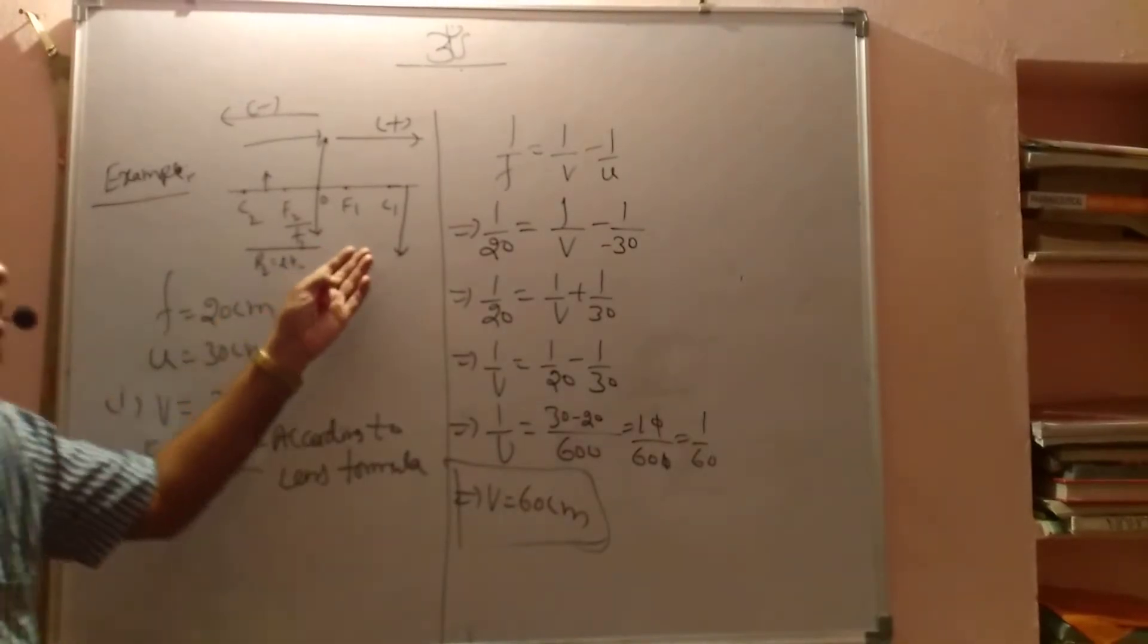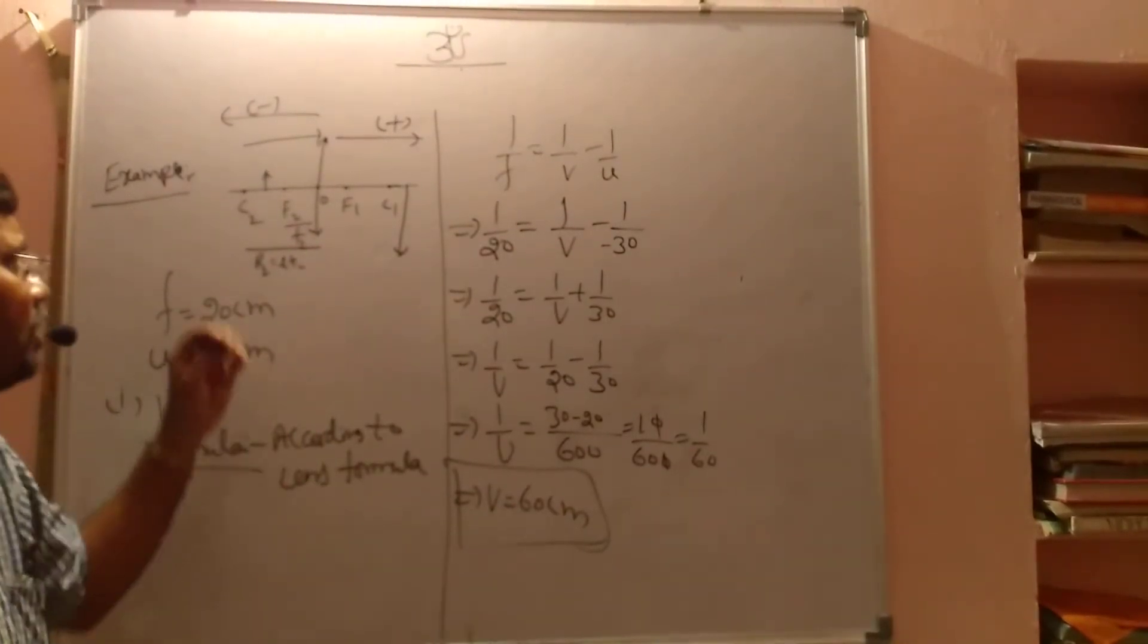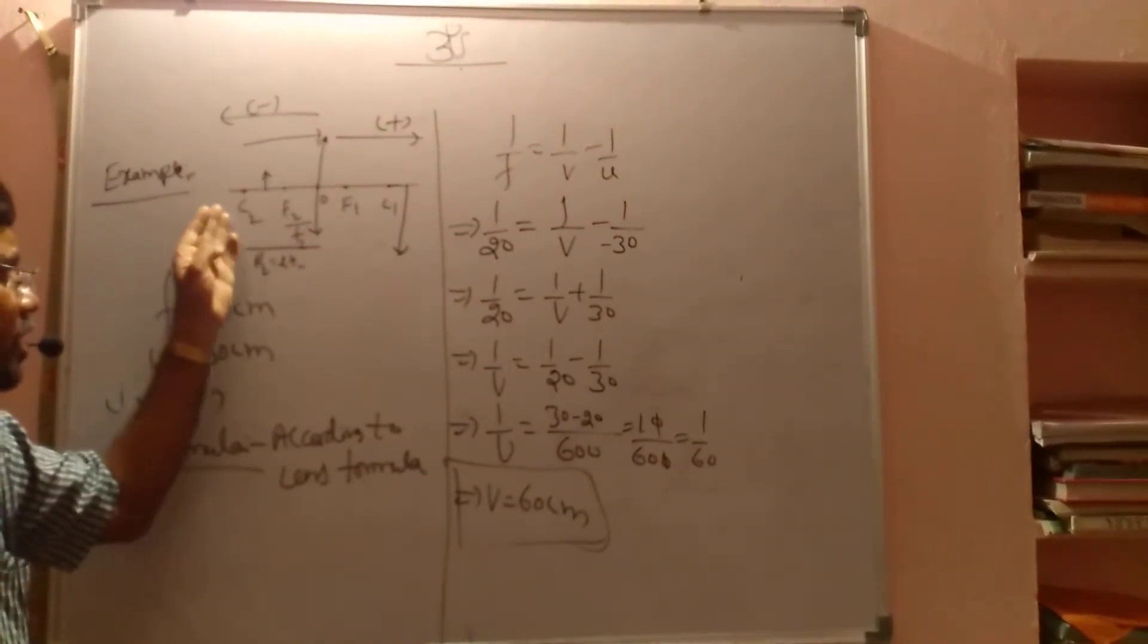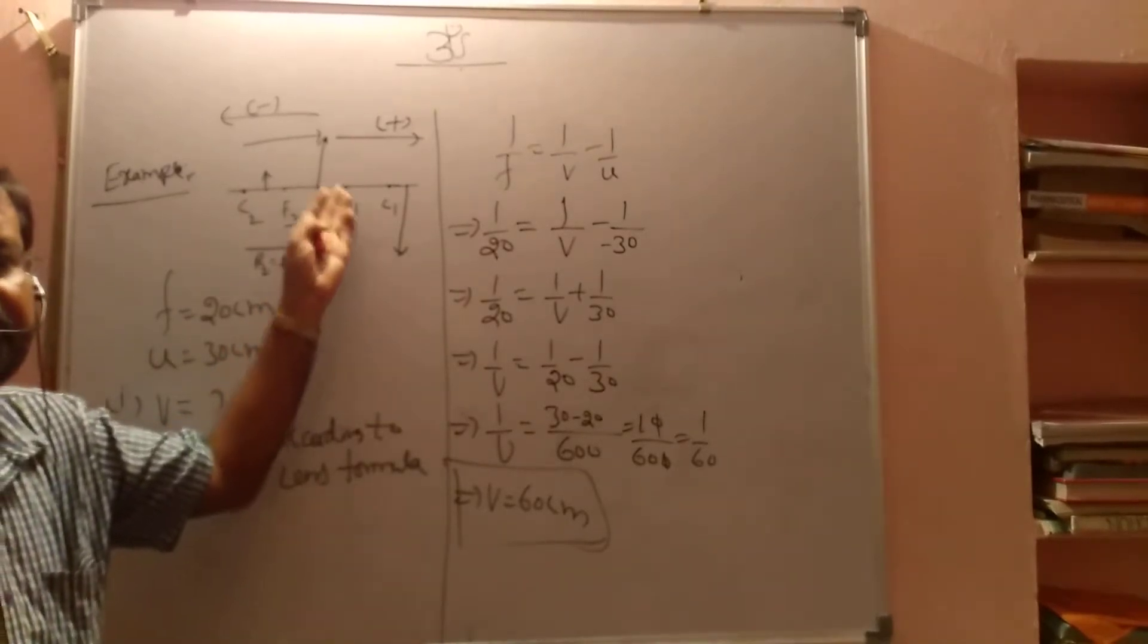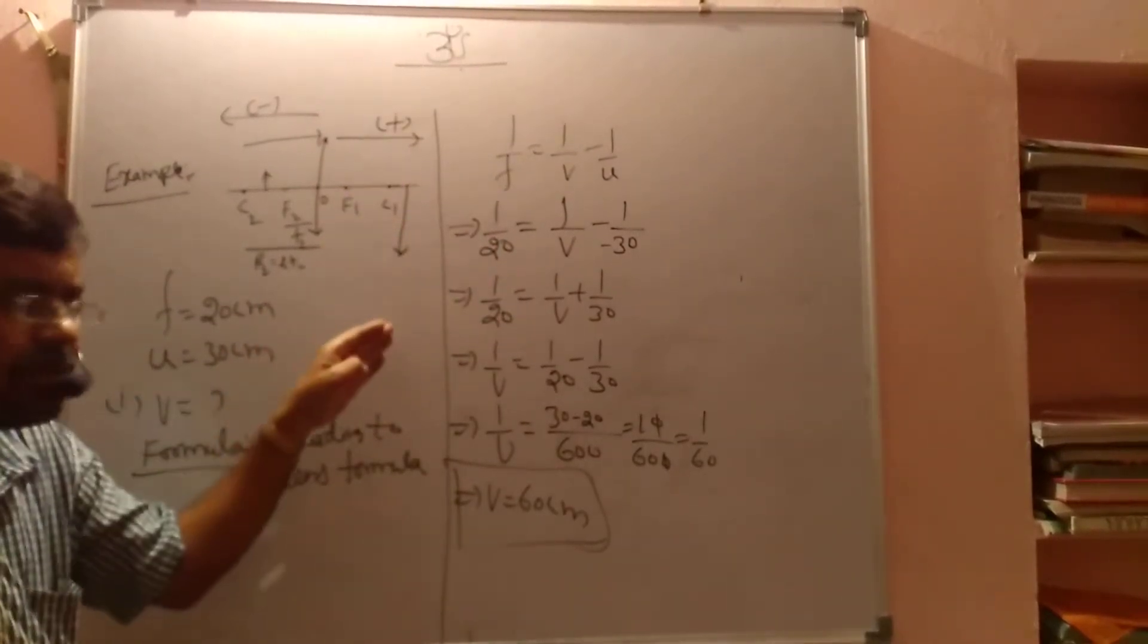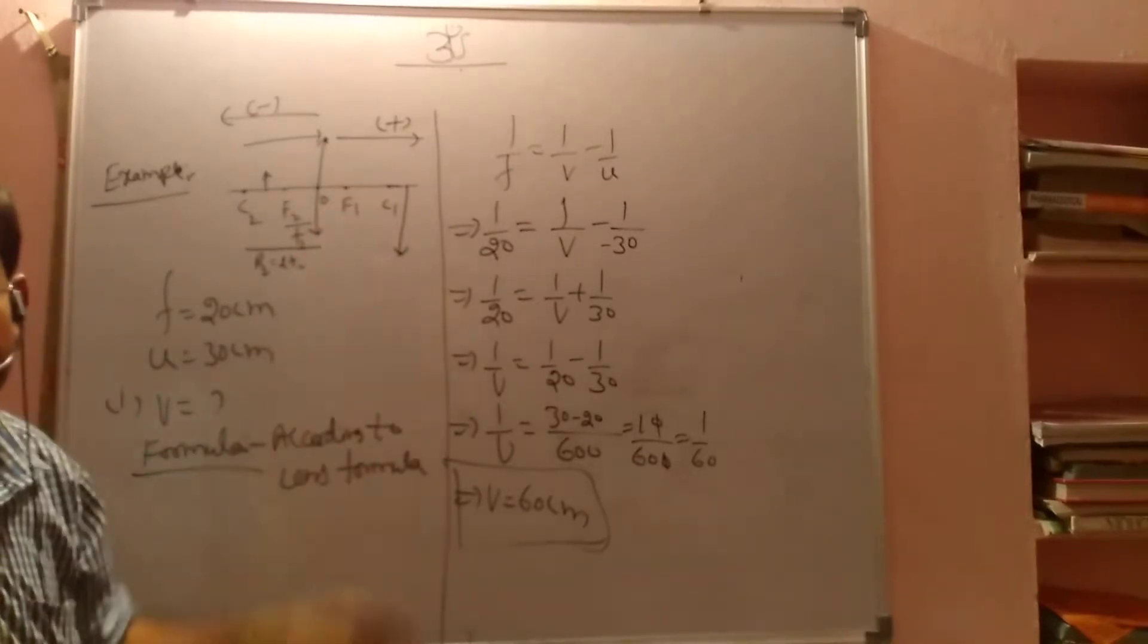Correct only. According to our information also, if the object is in between F and C, we are getting the image beyond the center of curvature. Opposite side, enlarged image, inverted image, real image.